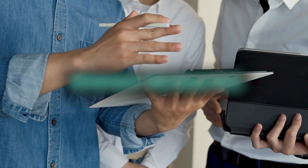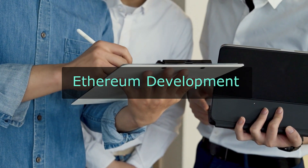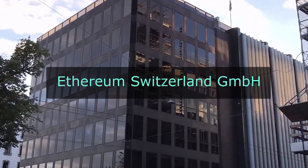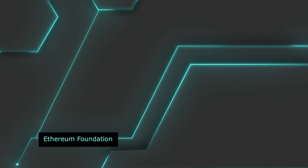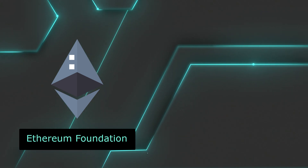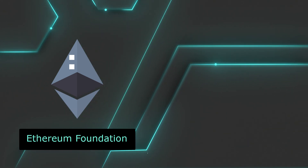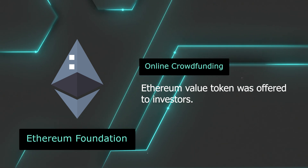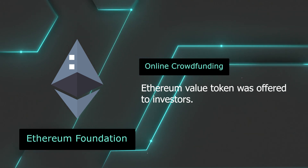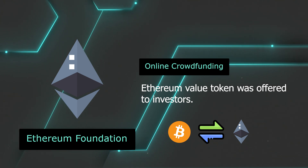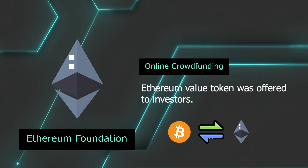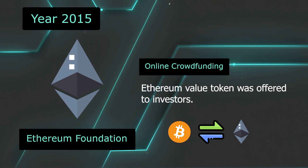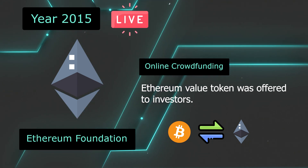Formal development of the software underlying Ethereum began in early 2014 through a Swiss company called Ethereum Switzerland. Subsequently, a Swiss non-profit foundation called the Ethereum Foundation was created. Development was funded by an online public crowd sale from July to August 2014, in which participants bought the Ethereum value token with another digital currency, Bitcoin. In July 2015, the Ethereum platform was officially launched and created its Genesis block.